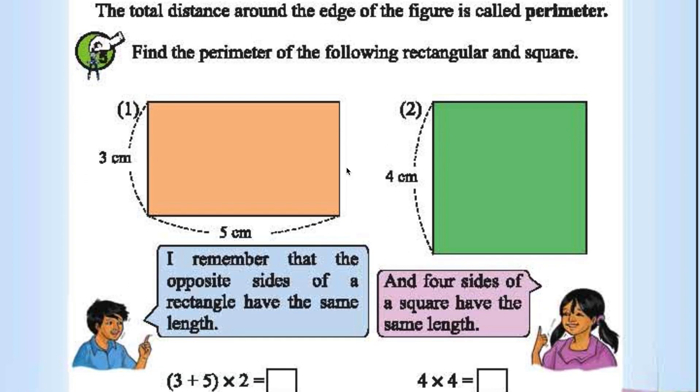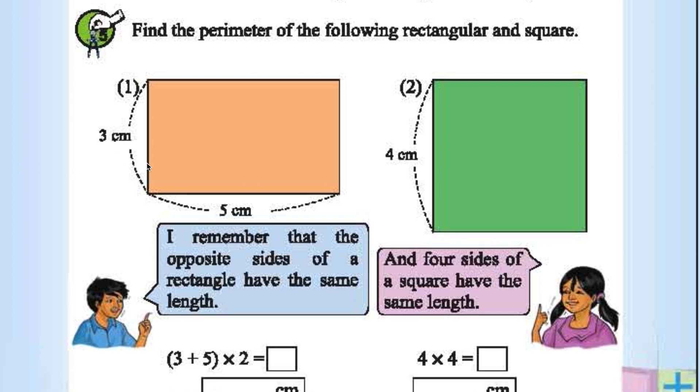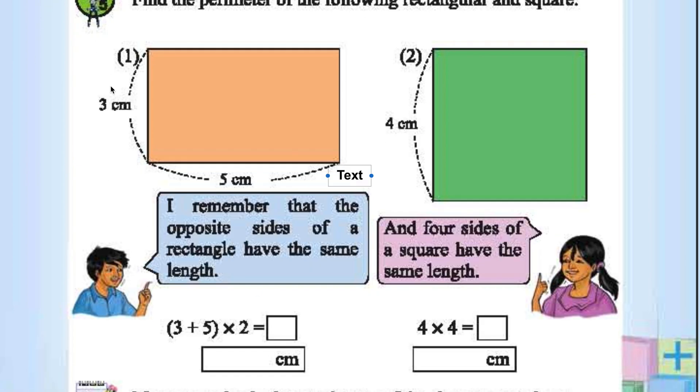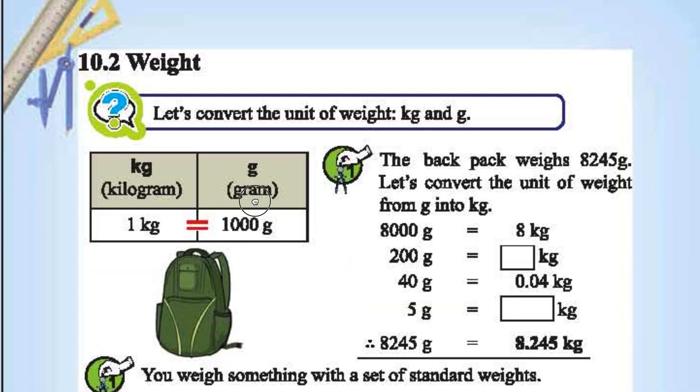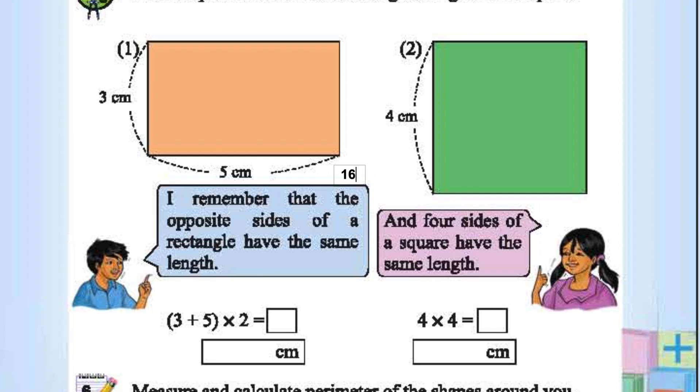Find the perimeter of the following rectangle and square. Rectangle: 2 times length plus width. Length is 5, width is 3. 5 plus 3 is 8, 8 times 2 is 16. So 16 centimeters is the perimeter for the first figure. The value is 16 centimeters, so everything is in centimeters, so it is 16 centimeters.